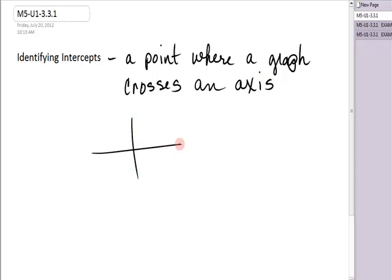For example, if I drew this line, if that was my graph, this point would be my x-intercept, and I'm just going to abbreviate it. This point, because it's crossing the y-axis, would be called my y-intercept.